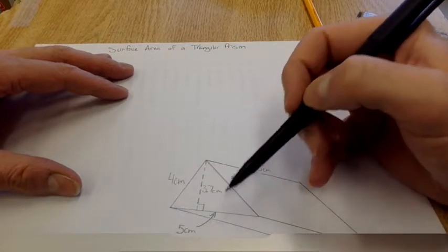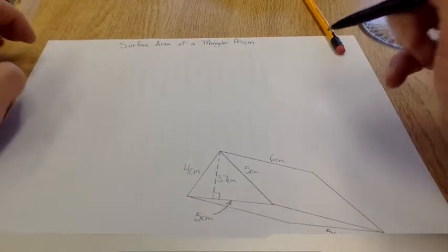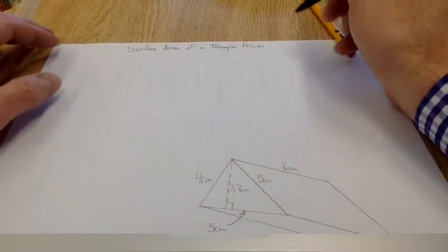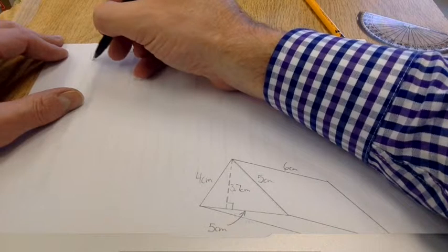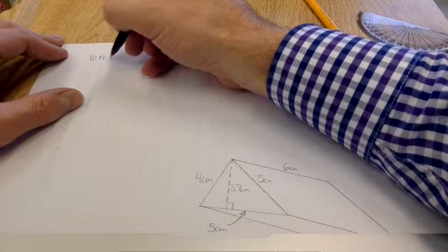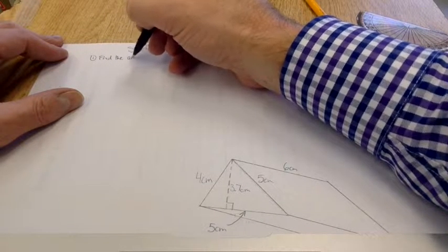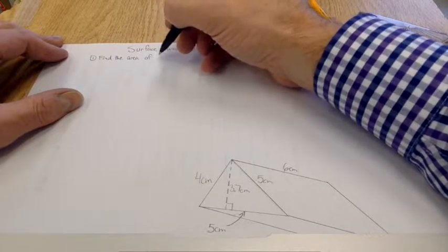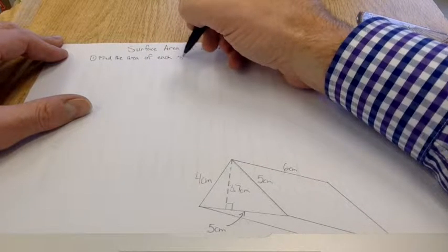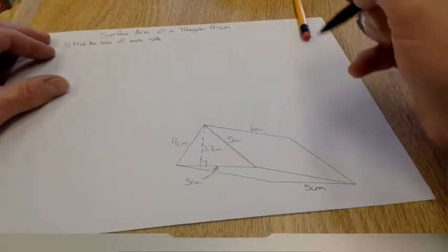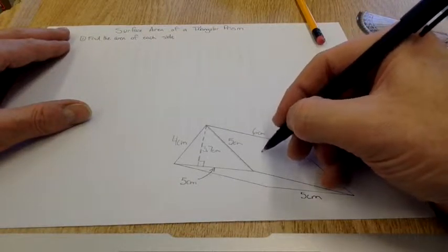Finding the surface area of a triangular prism, I am going to find the area of each side. So to make life a little bit easier, I'm going to number them.